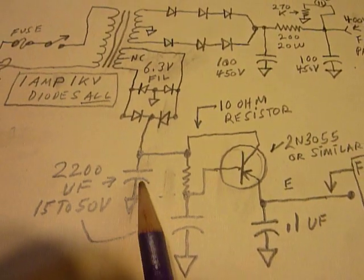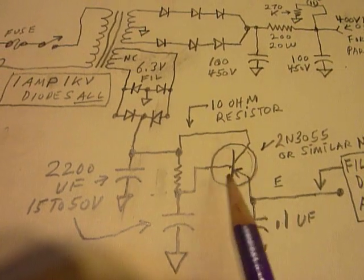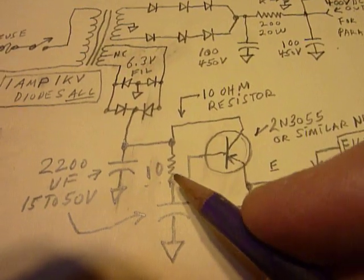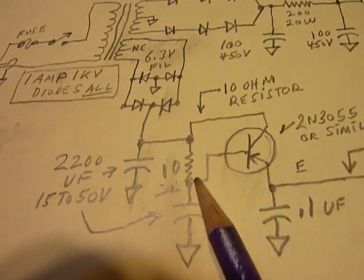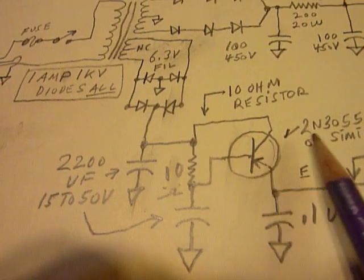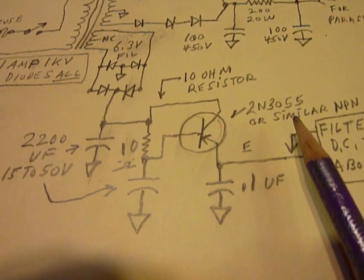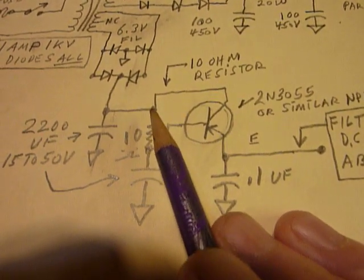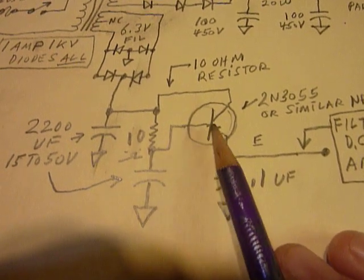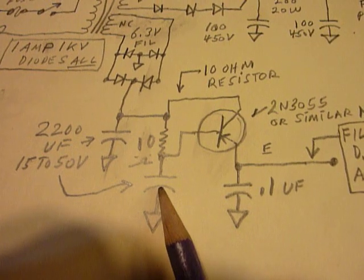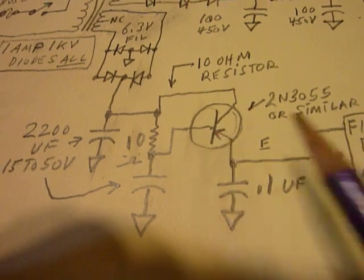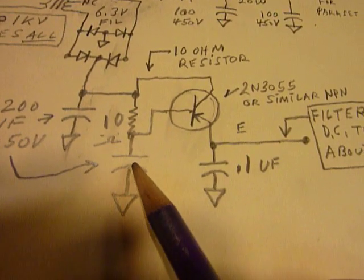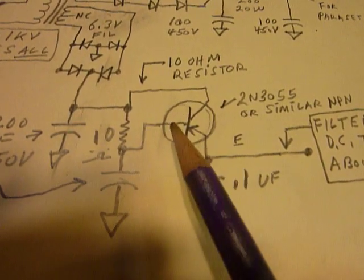This feeds down here to a 2200 microfarad capacitor filtering there, and then this is the humbucker circuit. I didn't write it down here, but this right here is a 10 ohm resistor right there. So this feeds into the collector of a transistor, a 2N3055. You can use most any NPN transistor that will handle a few amps. The base is connected then to the collector through this 10 ohm resistor right there, and then right here you've got another 2200 microfarad capacitor to ground. What happens is this transistor is acting as a multiplier to multiply the filtering action of this capacitor, and that really does a super job.